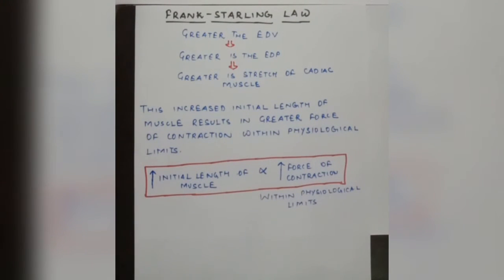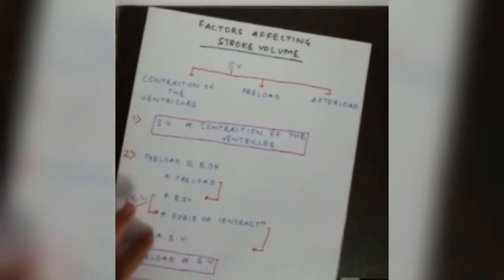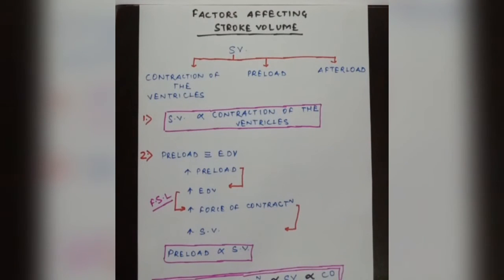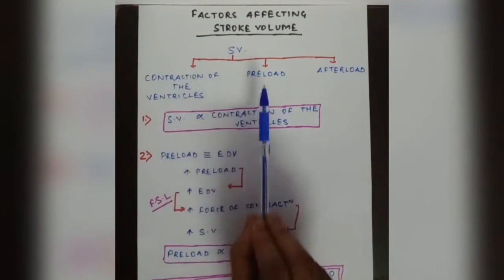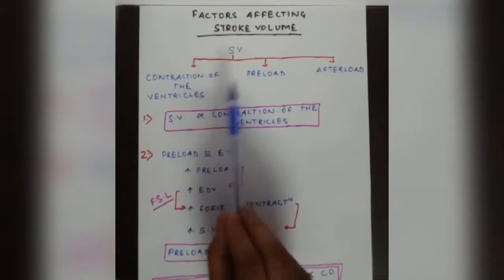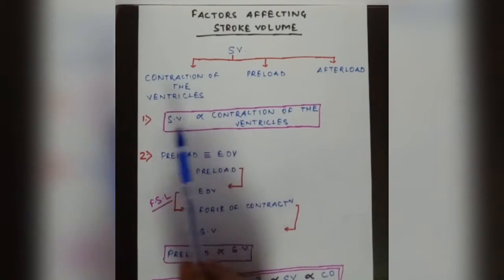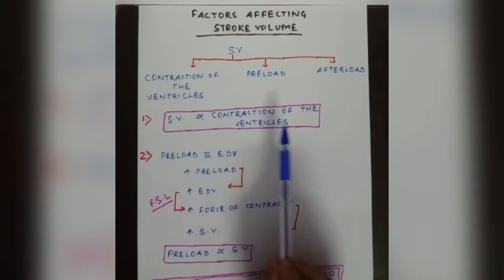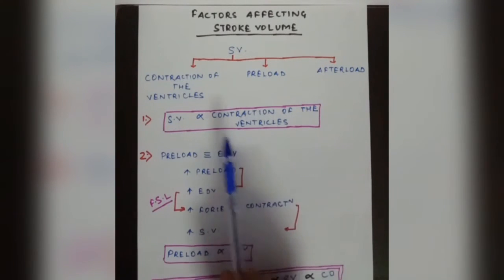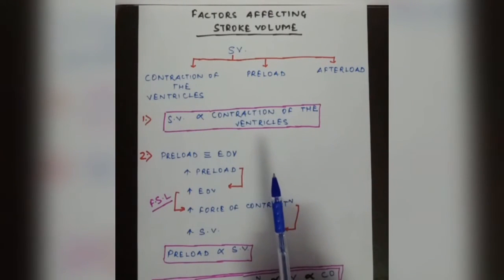Preload, afterload, and Frank-Starling law are applied when we learn about the factors affecting stroke volume. Stroke volume is affected by three factors: contractility of the ventricles, preload, and afterload. Stroke volume is directly proportional to the contractility of the ventricles — the more the ventricles contract, the more the stroke volume.